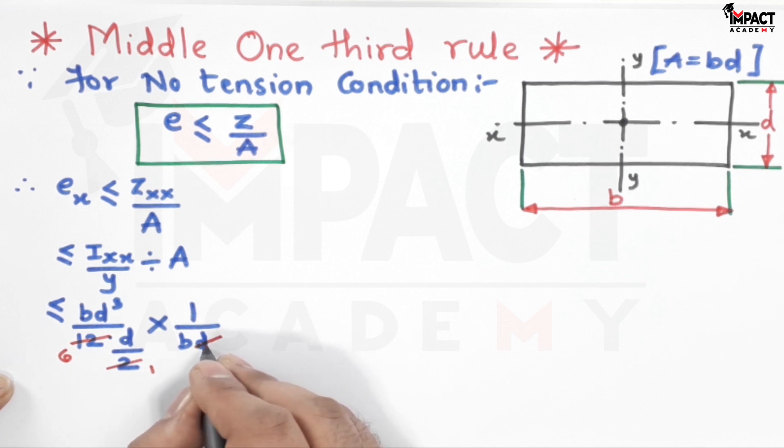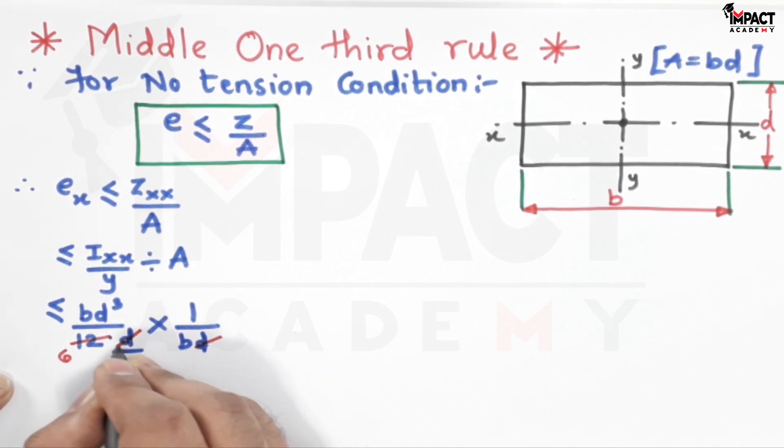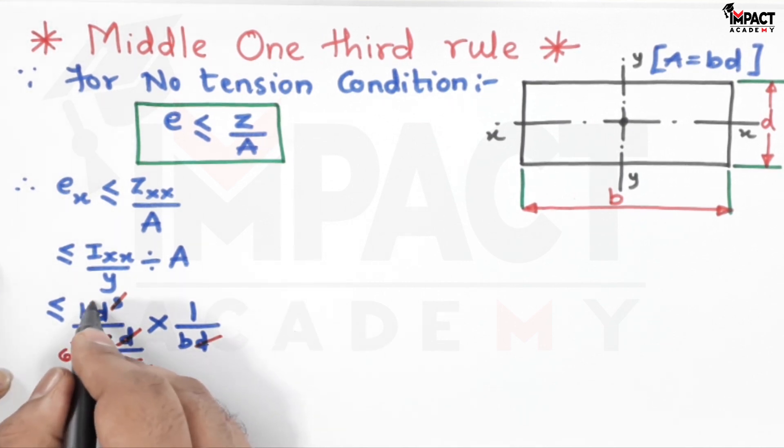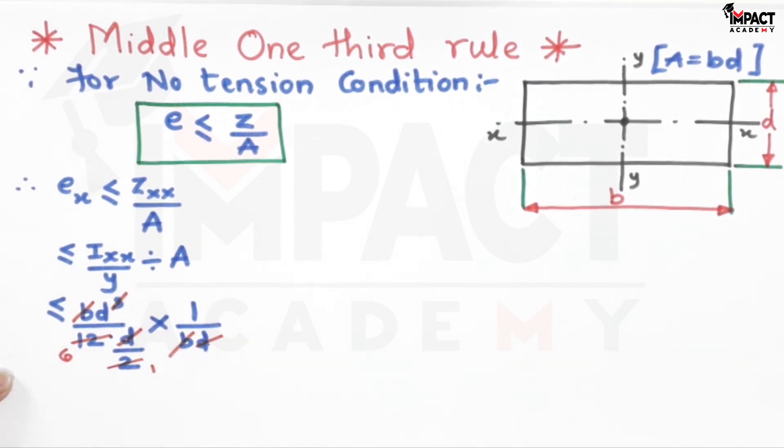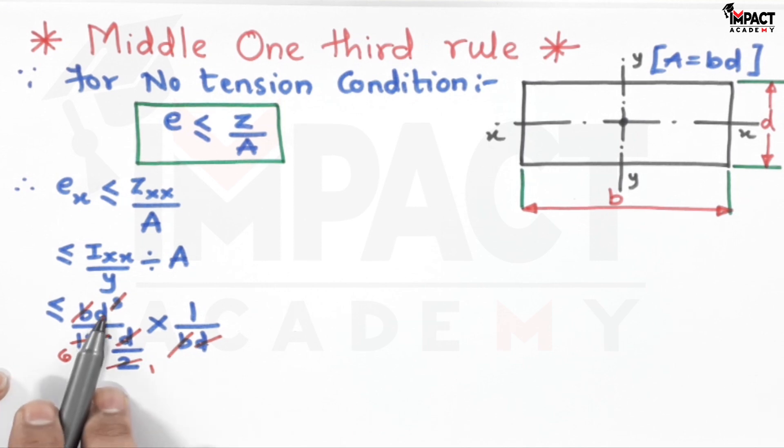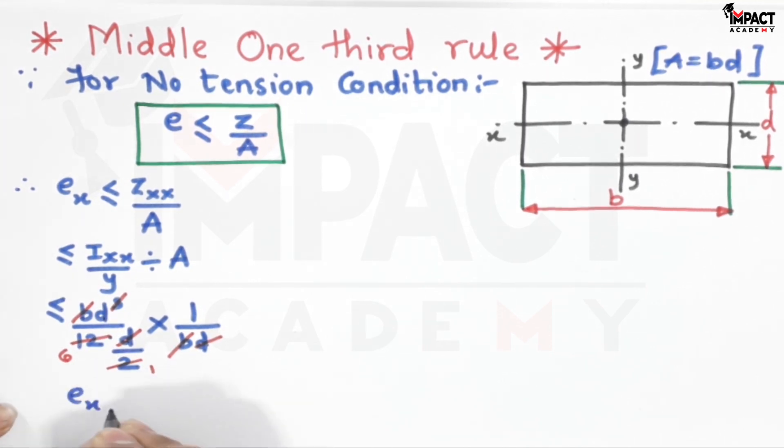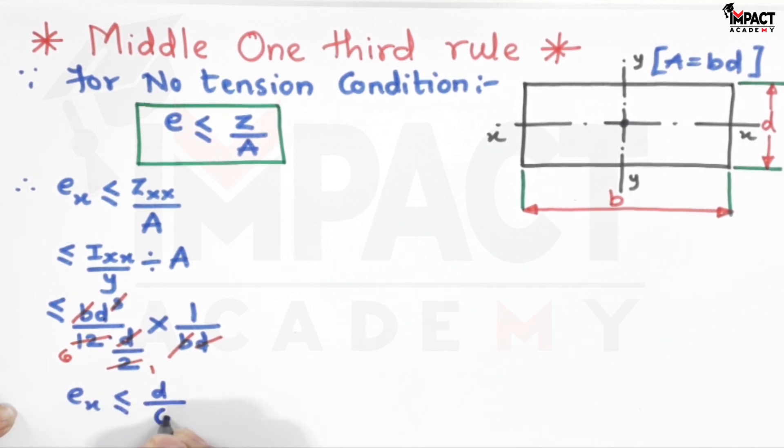After cancellation, d² cancels leaving d, and b cancels out, so we get d/6. Therefore, ex ≤ d/6.